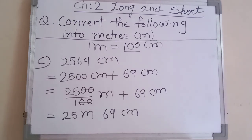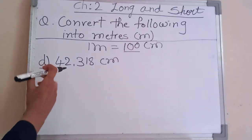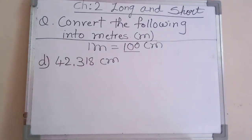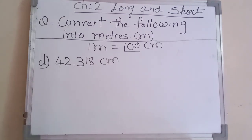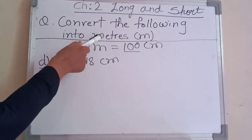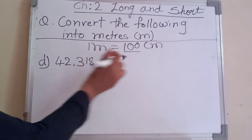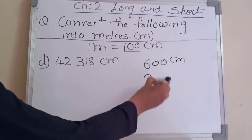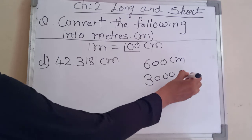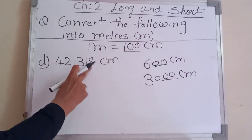Let's see the next example. Our fourth example is forty two thousand three hundred and eighteen centimeter. Will you divide by hundred directly? You know centimeter converted into meter means divide by hundred — but is it directly possible here? No, because the last two digits are not zero.